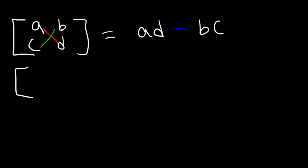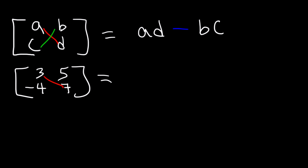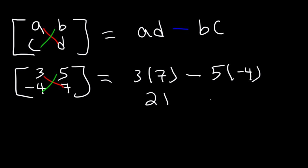So let's work on some examples. Let's say this is 3, 5, negative 4, 7. So it's going to be 3 times 7 minus 5 times negative 4. 3 times 7 is 21. Negative 5 times negative 4 is positive 20. And when you add them, this will give you 41.